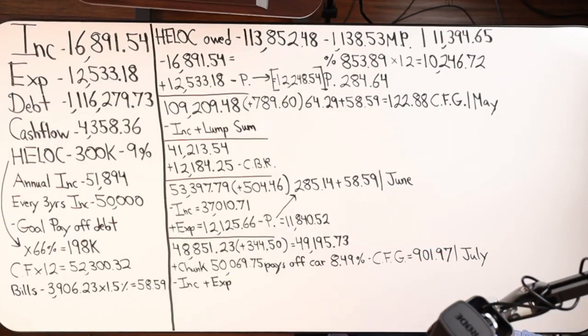A home equity line of credit, personal line of credit for the purpose of practicing the velocity banking concept. So that's what this person did here on the board. So let's go ahead and direct our attention to the whiteboard here.